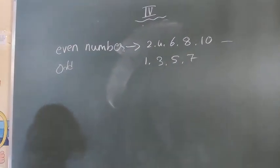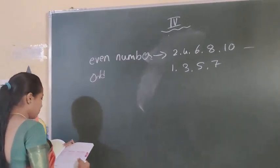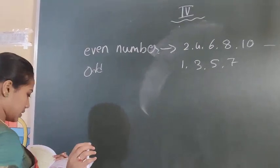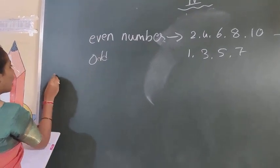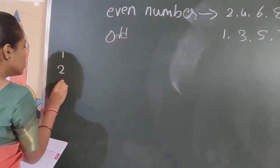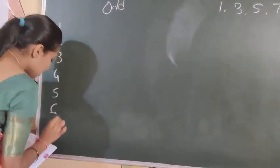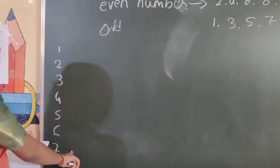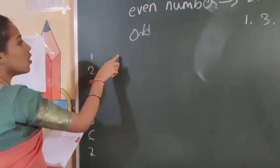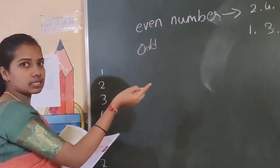See, prime and composite numbers. Prime numbers and composite numbers, see here: 1, 2, 3, 4, 5, 6, 7. These are the numbers. You have to write the factors. Factors in the sense, multiply.